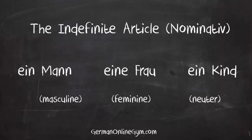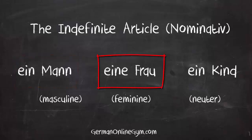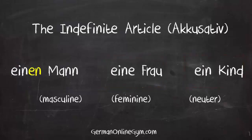Now let's have a look at the indefinite article. In the nominative case, that's the default case: ein (masculine), eine (feminine), and ein (neuter). And here is the accusative case: einen is the masculine form, eine (feminine) and ein (neuter). So again, feminine and neuter do not change — only the masculine indefinite article is affected: einen Mann.